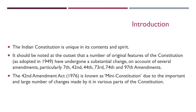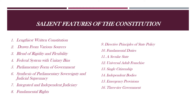The main salient features of the Indian Constitution are: the lengthiest written constitution drawn from various sources, blend of rigidity and flexibility, federal system with unitary bias, parliamentary form of government, synthesis of parliamentary sovereignty and judicial supremacy, integrated and independent judiciary, fundamental rights, directive principles of state policy, fundamental duties, secular state, universal adult franchise, single citizenship, independent bodies, emergency provisions, and three-tier government. These are the 16 salient features of the Indian Constitution.